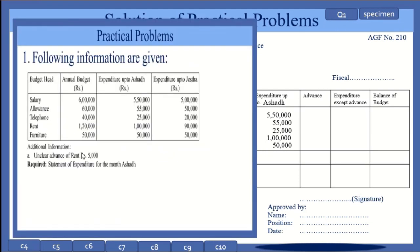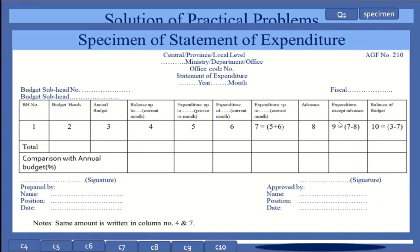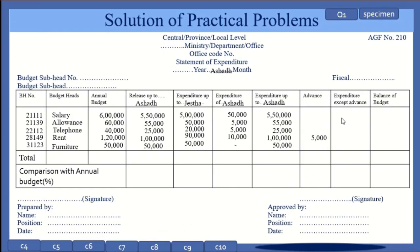The additional information mentions an unclear advance of rent of rupees 5,000. We write this in the advance column in front of rent. For column number 9, we subtract column 8 from column 7: 5 lakh 50,000 minus 0 equals 5 lakh 50,000; 55,000 minus 0 equals 55,000; 25,000 minus 0 equals 25,000; 1 lakh minus 5,000 equals 95,000; 50,000 minus 0 equals 50,000.